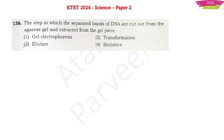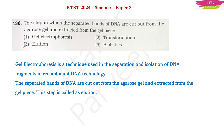Next question — the step in which the separated bands of DNA are cut out from the agarose gel and extracted from the gel piece. I gave the answer as gel electrophoresis; I got confused with the agarose gel. Electrophoresis is used in recombinant DNA technology for separation and isolation of DNA fragments, but the agarose gel cutting step comes after gel electrophoresis. That next step is called elution. My answer was close but it was wrong — the correct answer is elution.